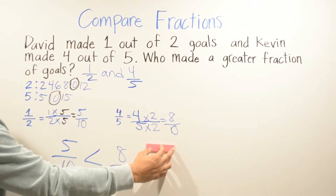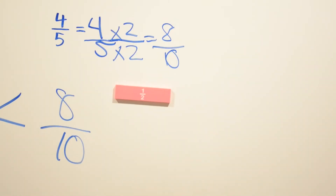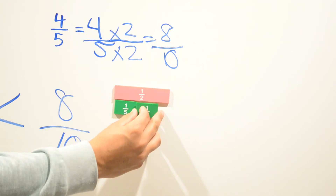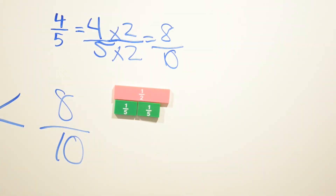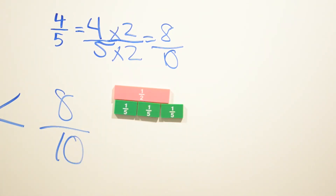Another way to check our work is by using manipulatives like tiles. I'm using a tile for one half — he made one out of two goals — and a tile for one fifth, since Kevin made four out of five goals. We'll use four of the one-fifth tiles to check if the answer is correct.